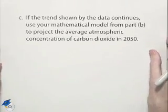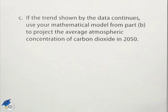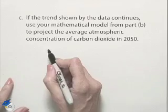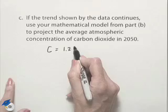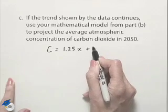If the trend shown by the data continues, use your mathematical model from part b to project the average atmospheric concentration of carbon dioxide in the year 2050. So our mathematical model was C equals 1.25 times x plus 310.